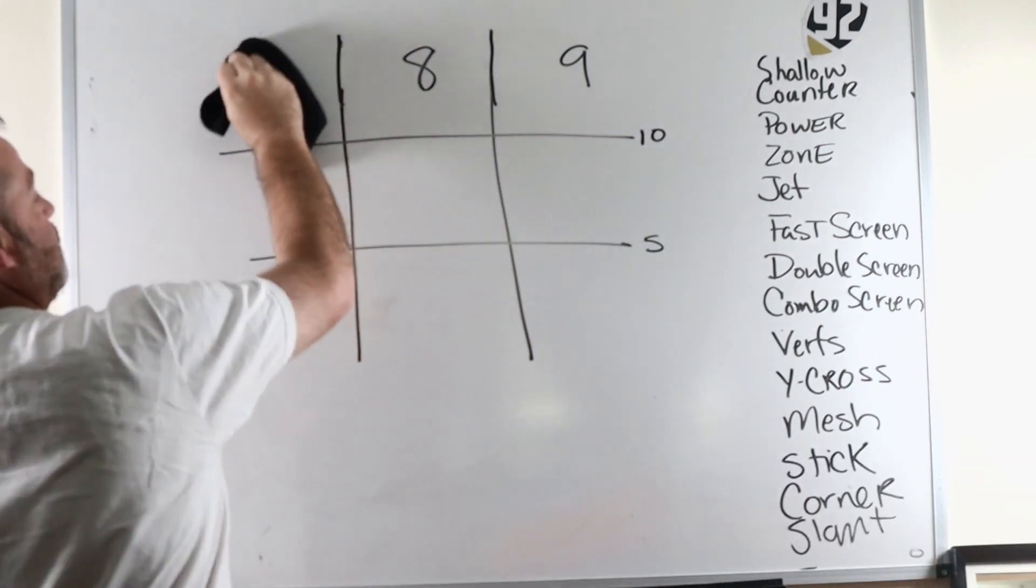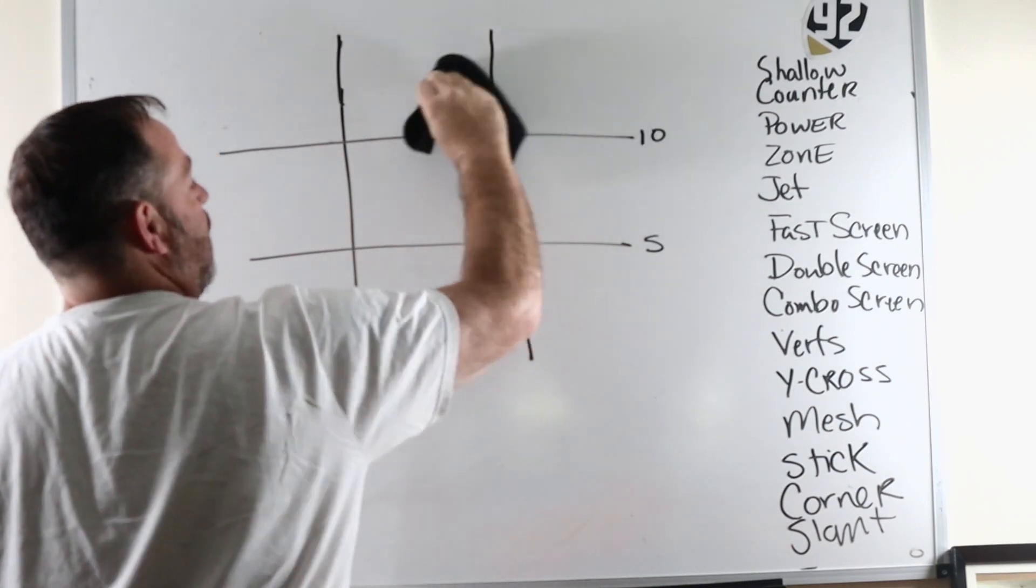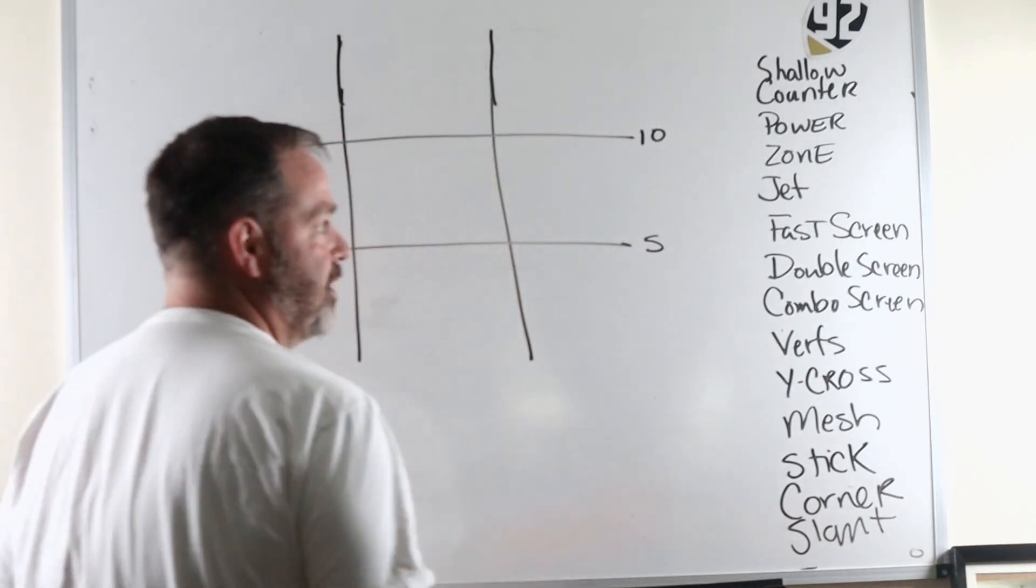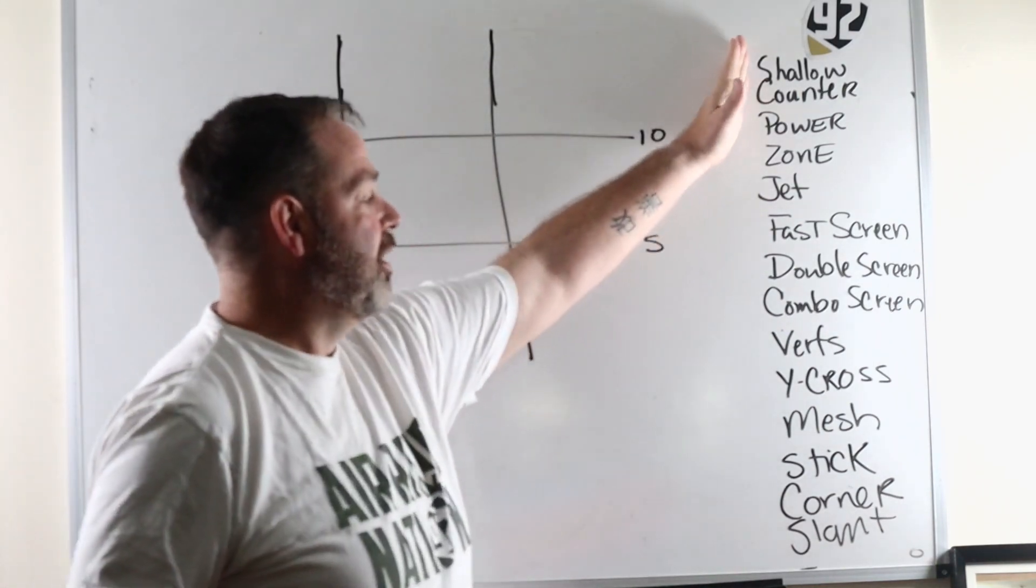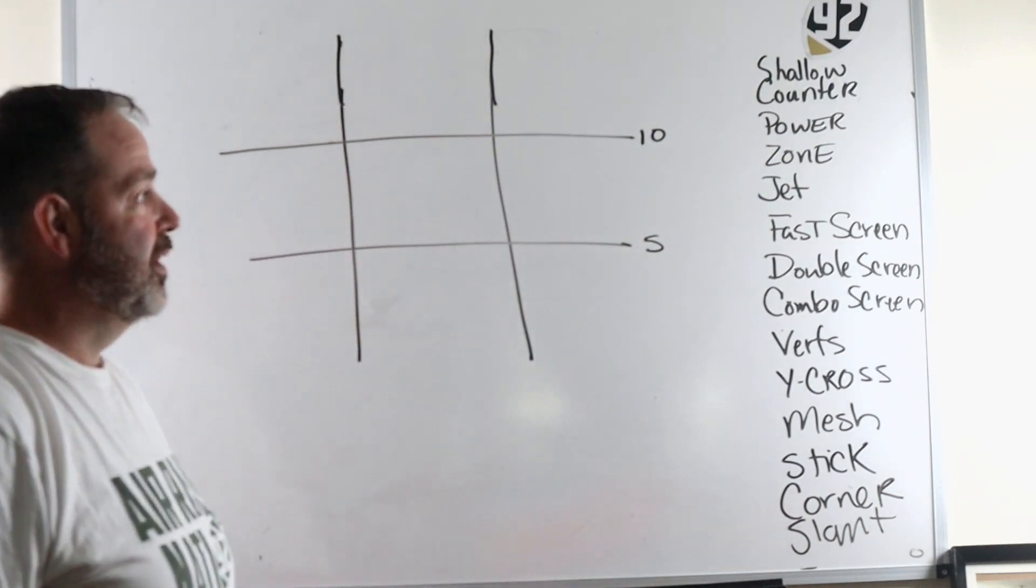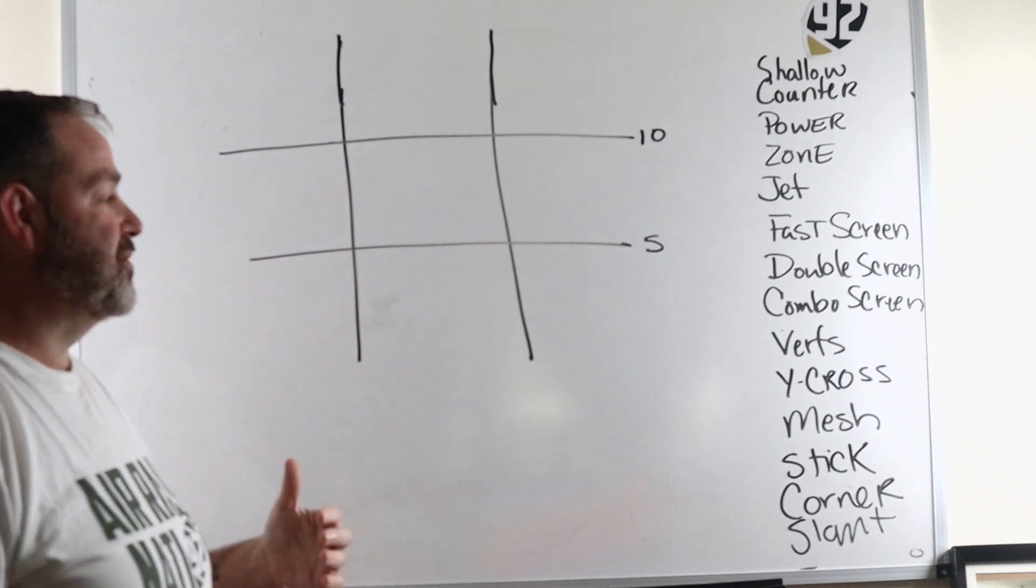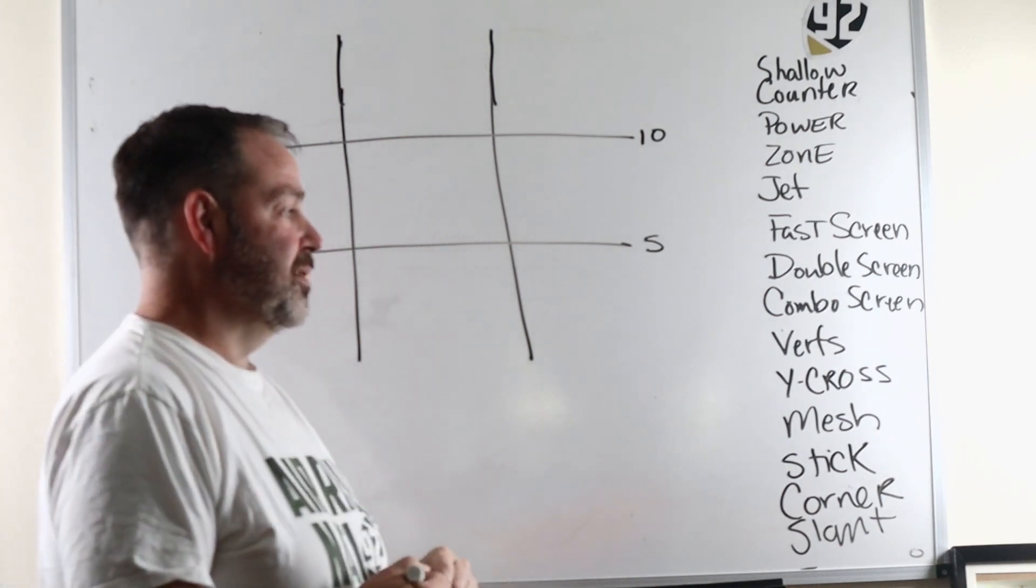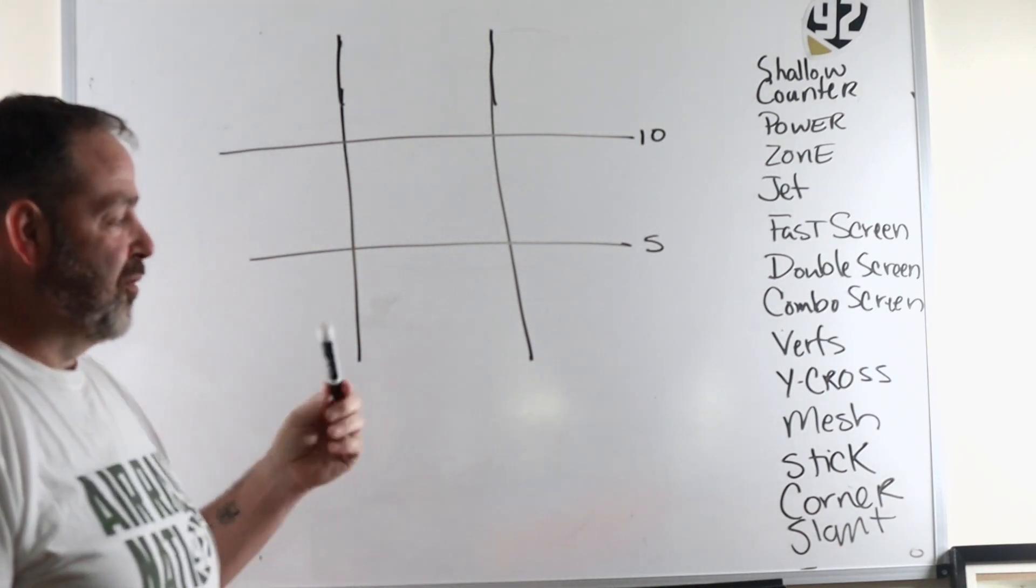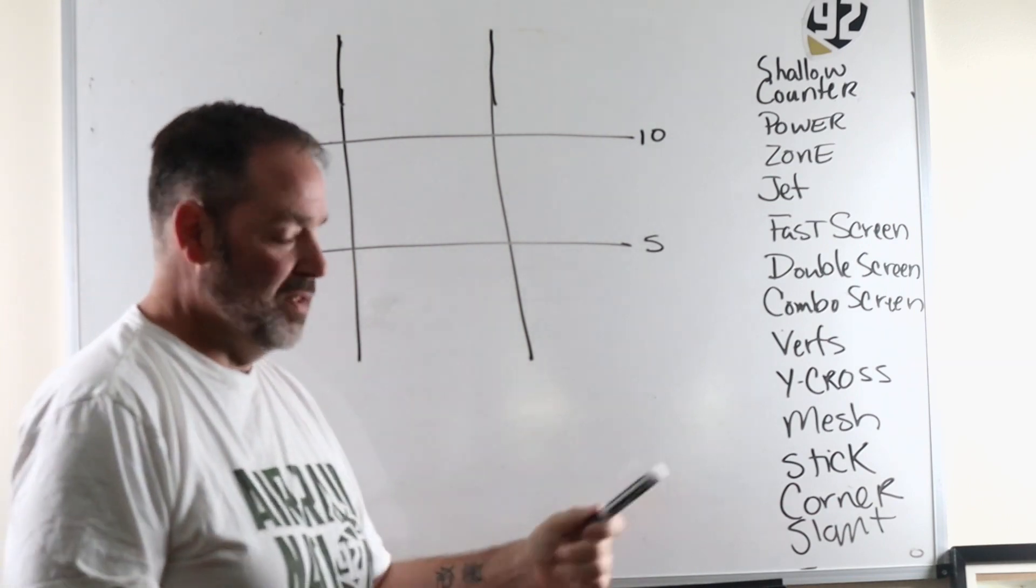So let me erase the numbers and give you an idea of what I'm talking about. If you list your offense, and this is kind of what we're running right now, we're running shallow counter power, our mid-zone play, our jet sweep, our fast screen, our double screen, our combo screen, our four verts, wide cross mesh, stick, corner, and slant. Correct me if I'm wrong in the comments below, but I think that's 14 plays.